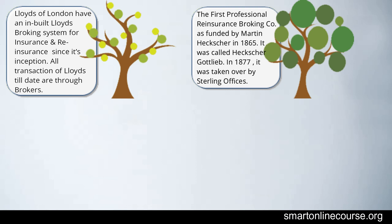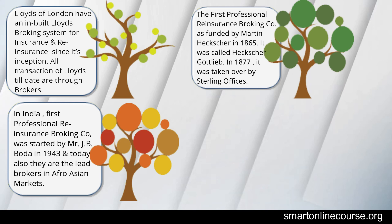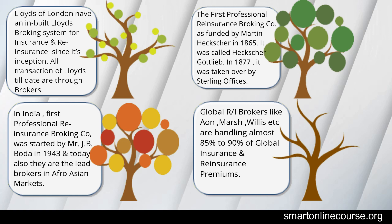In India, the first professional reinsurance broking company was started by the legendary Mr. J.B. Boda in 1943. Today they are lead brokers in Australian markets. Global reinsurance brokers like Aon, Marsh, and Willis are handling almost 85–90% of global insurance and reinsurance premiums. Today in India, brokers are regulated with requirements for a capital base, technical qualification, and regulations to organize broking in a systematic way.